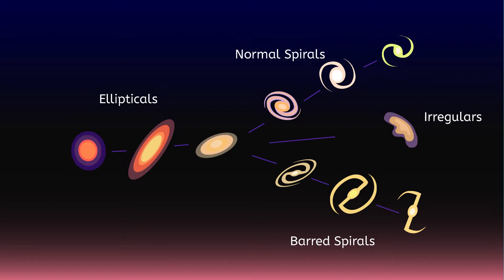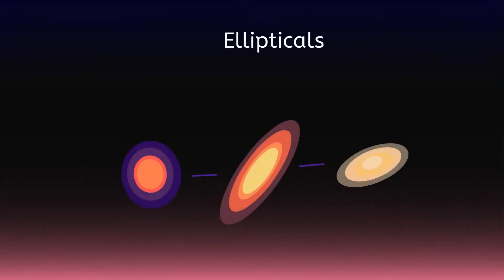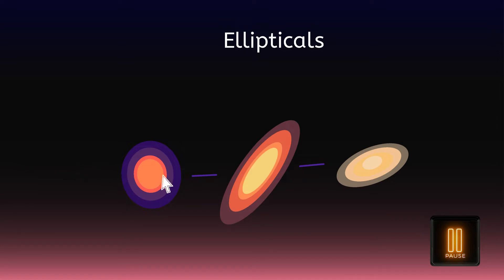Let's take a closer look at the Hubble Sequence and see how galaxies are classified. Galaxies are sorted into three categories based on their shape: elliptical, spiral, and irregular. Before we take a closer look at each type, try your hand at classifying like an astronomer. Pause the video here and write down what you notice about the elliptical galaxies from the Hubble Sequence — make observations about their shape, brightness, color, and features.